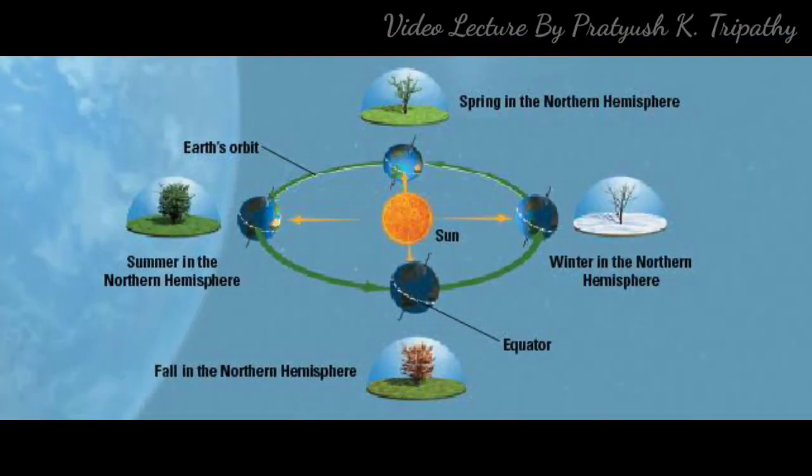Dear learners, do you know what are the effects of the inclination of the axis? The alteration of the seasons. The inclination of the axis has important consequences. Because of its tilted position, each pole is inclined alternatively towards the sun twice a year.